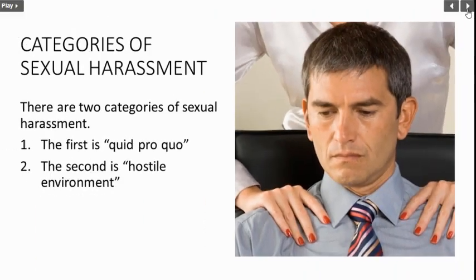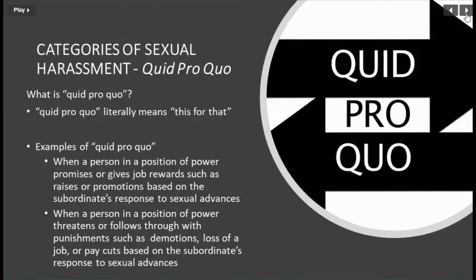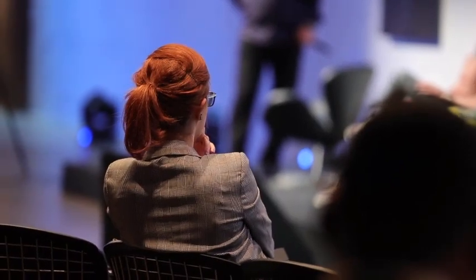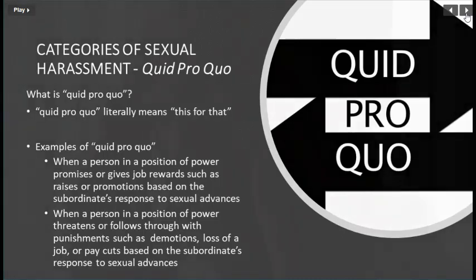There are two categories of sexual harassment. The first is quid pro quo, which literally means 'this for that.' Quid pro quo occurs when a person in a position of power promises or gives job rewards — such as raises or promotions — or threatens punishments — such as demotions, loss of a job, or pay cuts — based on a subordinate's response to sexual advances.